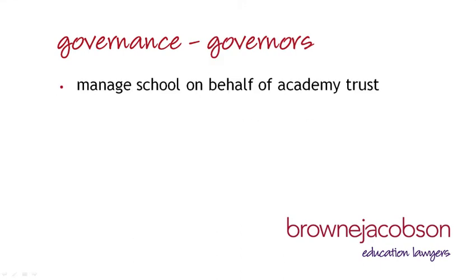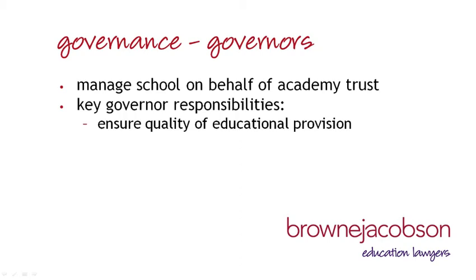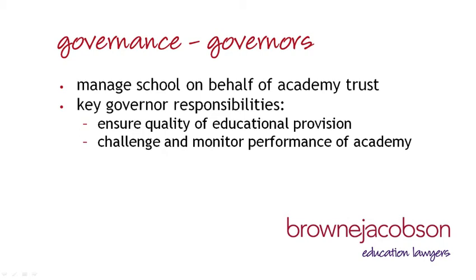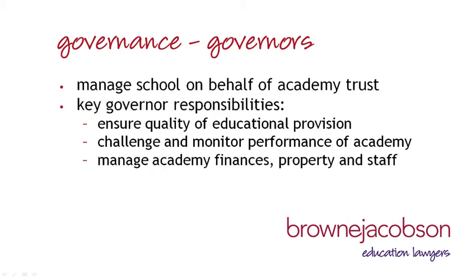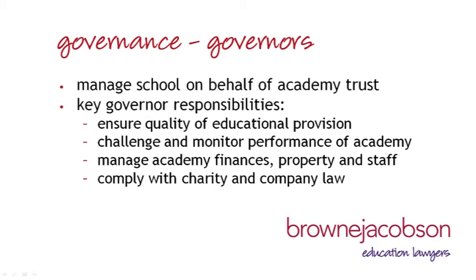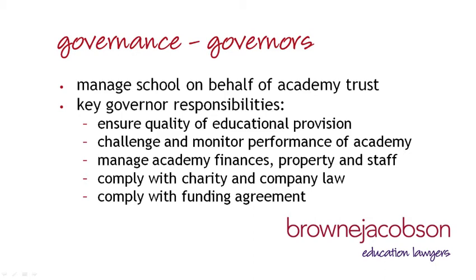It is the governors who manage the Academy, although as with maintained schools they may delegate their powers as necessary to the head teacher. Key governor responsibilities include ensuring a high quality of educational provision, challenging and monitoring the performance of the Academy and the leadership team, managing finances and setting terms and conditions for members of staff. However, there are new duties to reflect the legal status of academies as companies. Governors will need to become familiar with new duties placed on them in their capacity as both charity trustees and company directors. It is also important that governors understand the obligations set out in the funding agreement, which is the main agreement between the Academy Trust and the Secretary of State setting out how governors must run the Academy.